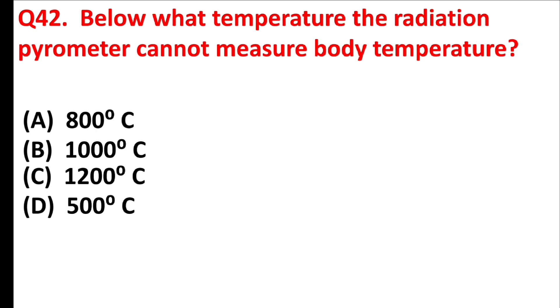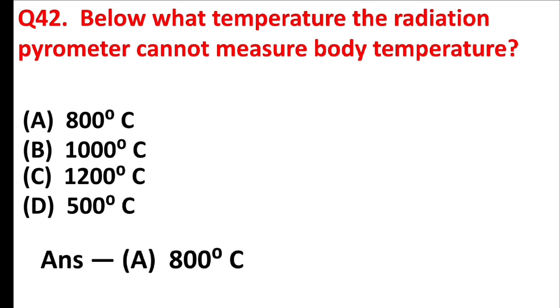Below what temperature can a radiation pyrometer not measure body temperature? Answer is Option A: 800 degrees Celsius.